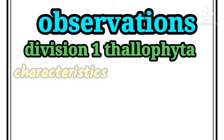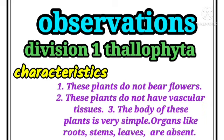Division 1 — Thallophyta characteristics: First, these plants do not bear flowers. Second, these plants do not have vascular tissue. The body of these plants is very simple; organs like root, stem, and leaves are absent.